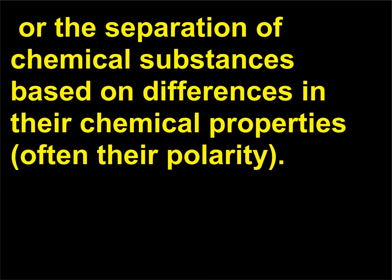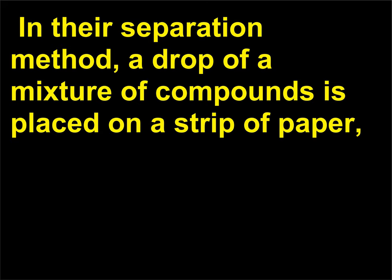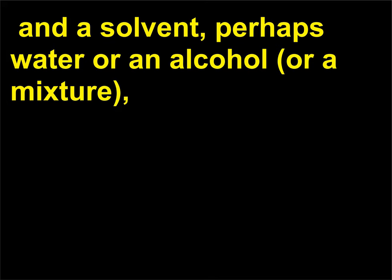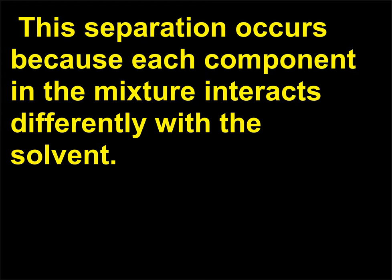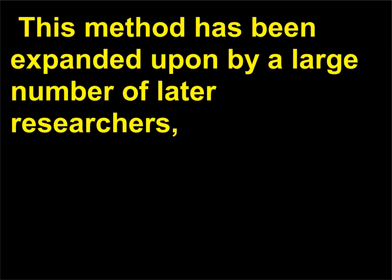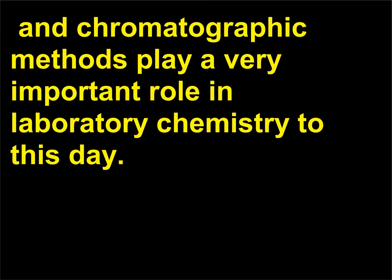In their separation method, a drop of a mixture of compounds is placed on a strip of paper, and a solvent — perhaps water or an alcohol, or a mixture — is drawn up the strip, resulting in a separation of the compounds in the mixture. This separation occurs because each component in the mixture interacts differently with the solvent. This method has been expanded upon by a large number of later researchers, and chromatographic methods play a very important role in laboratory chemistry to this day.